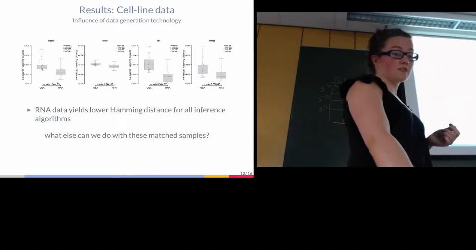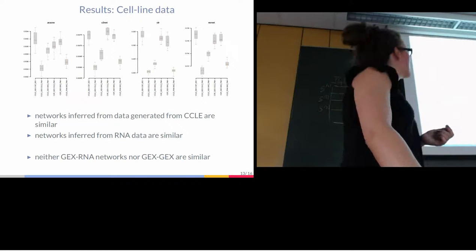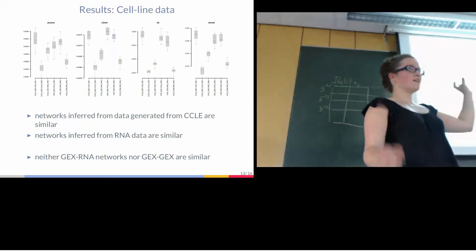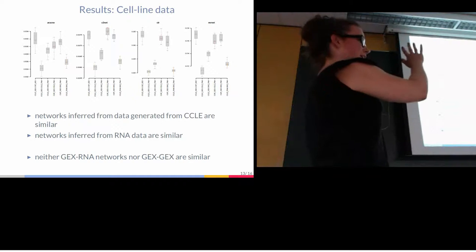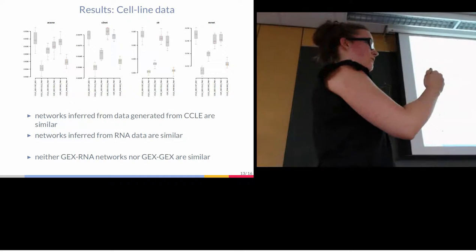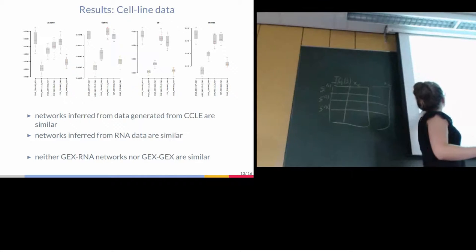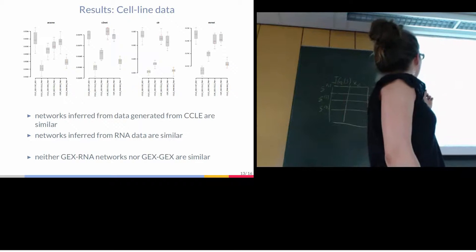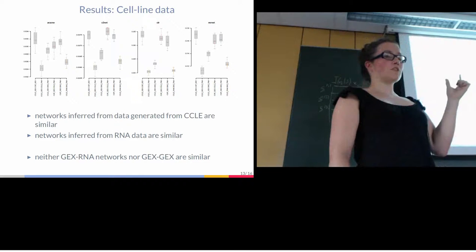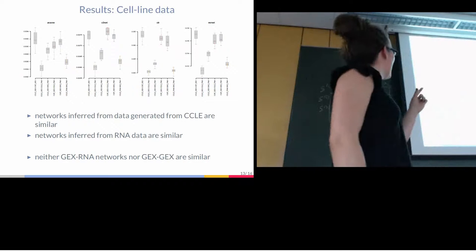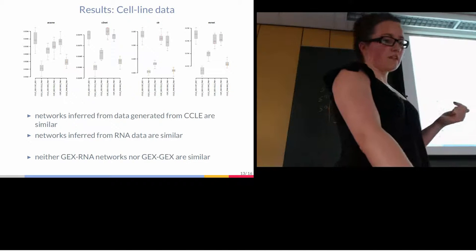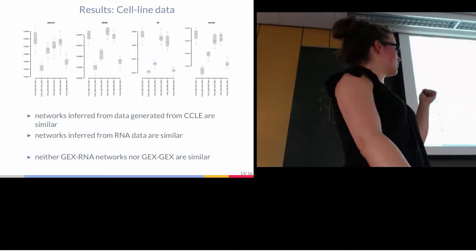And since we have these nicely matched samples, what else can we do with the cell line data? So this plot is a bit different in that the x-axis now is the combination of two datasets. So now I took my 10 cross-validated networks for two datasets and I computed the difference, the Hamming distance between those networks. So I can compare CCLE microarray versus CGP microarray, I can compare CCLE microarray versus CCLE RNA and so on. And there I can see that actually the data from CCLE, both types give me similar networks and that the RNA data is actually giving me similar networks even though they were produced in different labs. And the same does not hold for gene expression data.